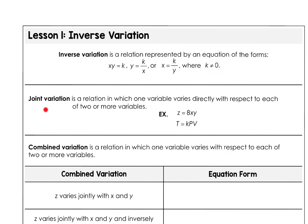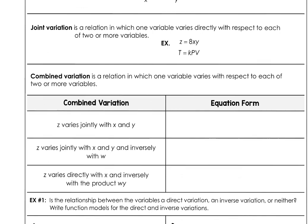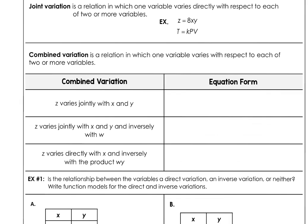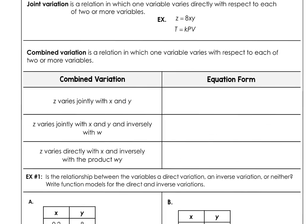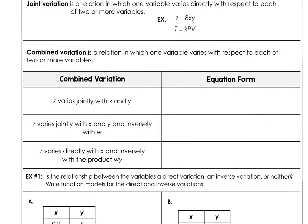Joint variation is any relation where one variable varies directly with respect to two or more variables. Combined variation is a relation where one variable varies with respect to two or more variables, and we'll see examples of both below.